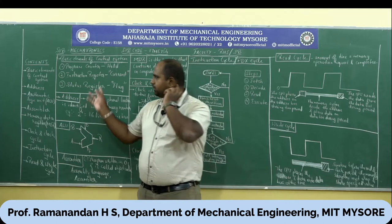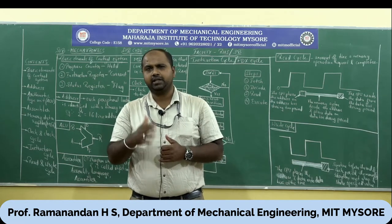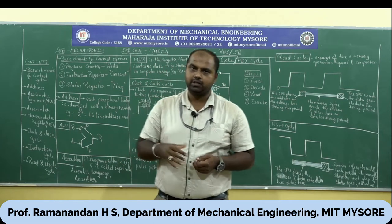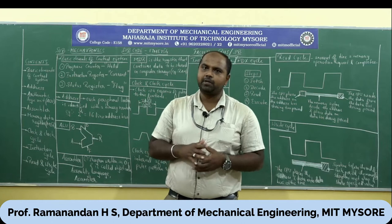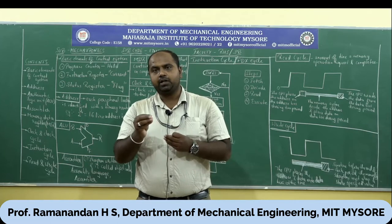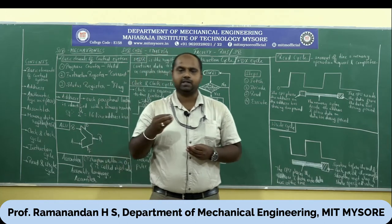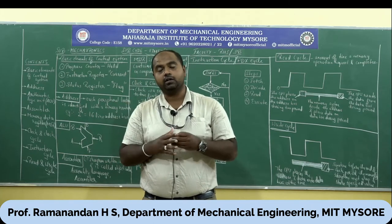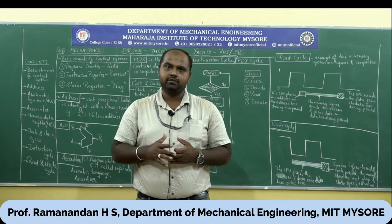Today's discussion will start with something called basic elements of a control system. Elements means nothing but a small group of components involved for a particular function. A control system is needed whenever you are performing a function or have been instructed to do something. In computer language, we call it an instruction — a set of commands given to execute. The computer is not a human being; it cannot think on its own, so it needs something to take the instruction.